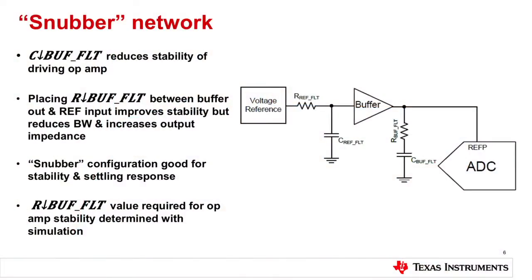Moving on to filtering, in this case we choose a snubber network — basically an RC filter — with one major difference: the resistor is not in series with the output. This snubber network maintains dynamic range because it doesn't degrade the output swing as drastically as the RC filter discussed in the previous segment. It maintains stability, provides adequate step-response settling time, and preserves dynamic range.